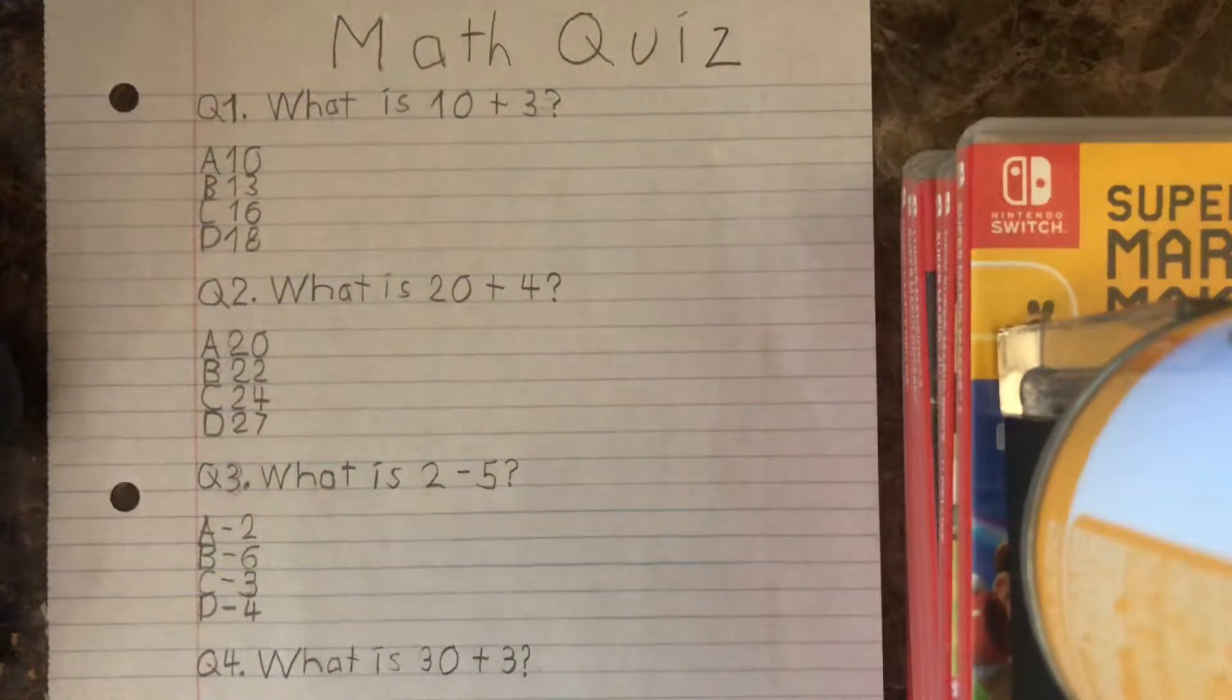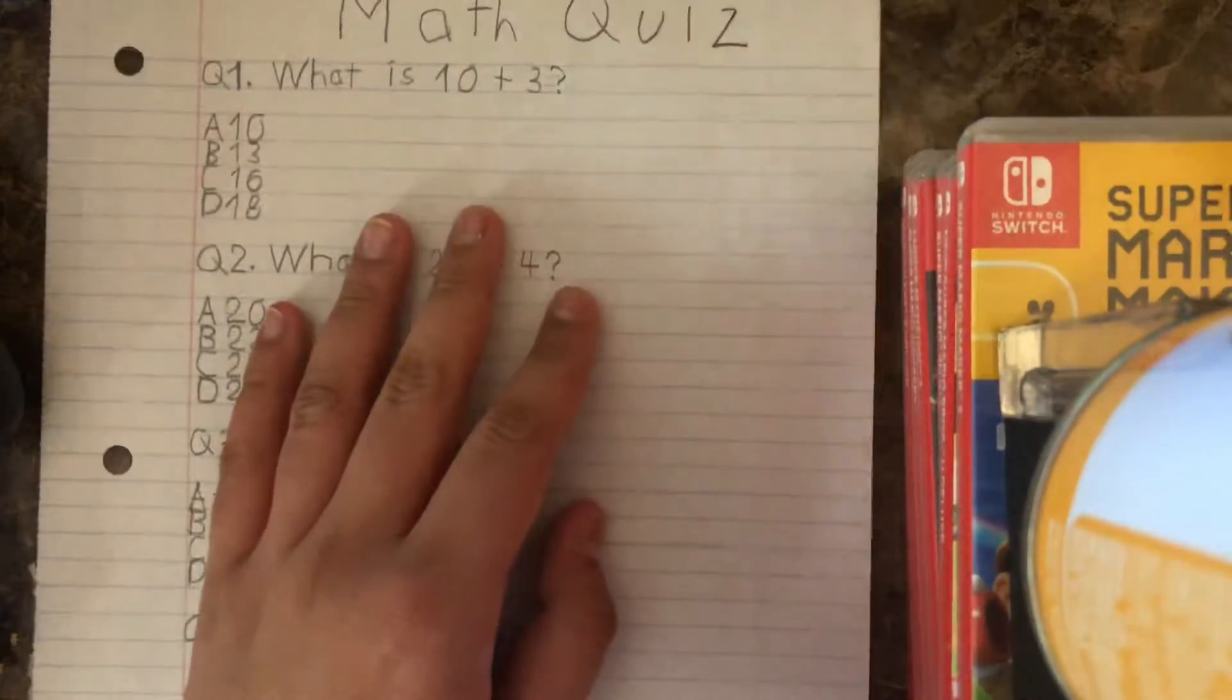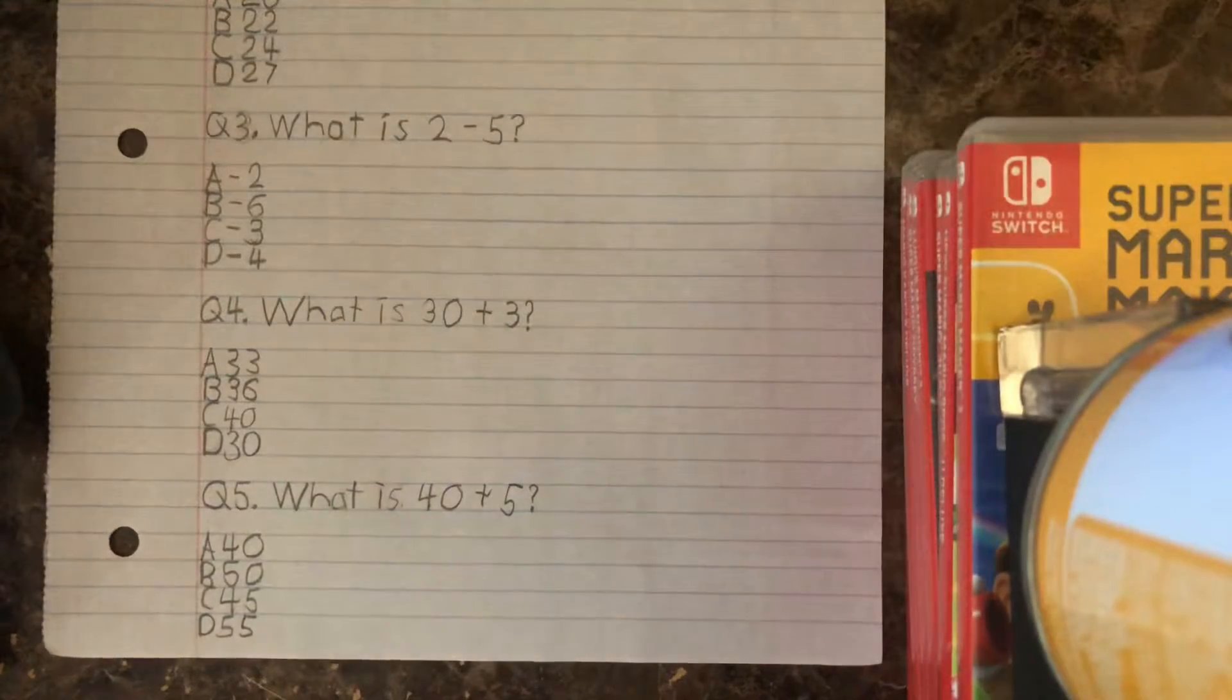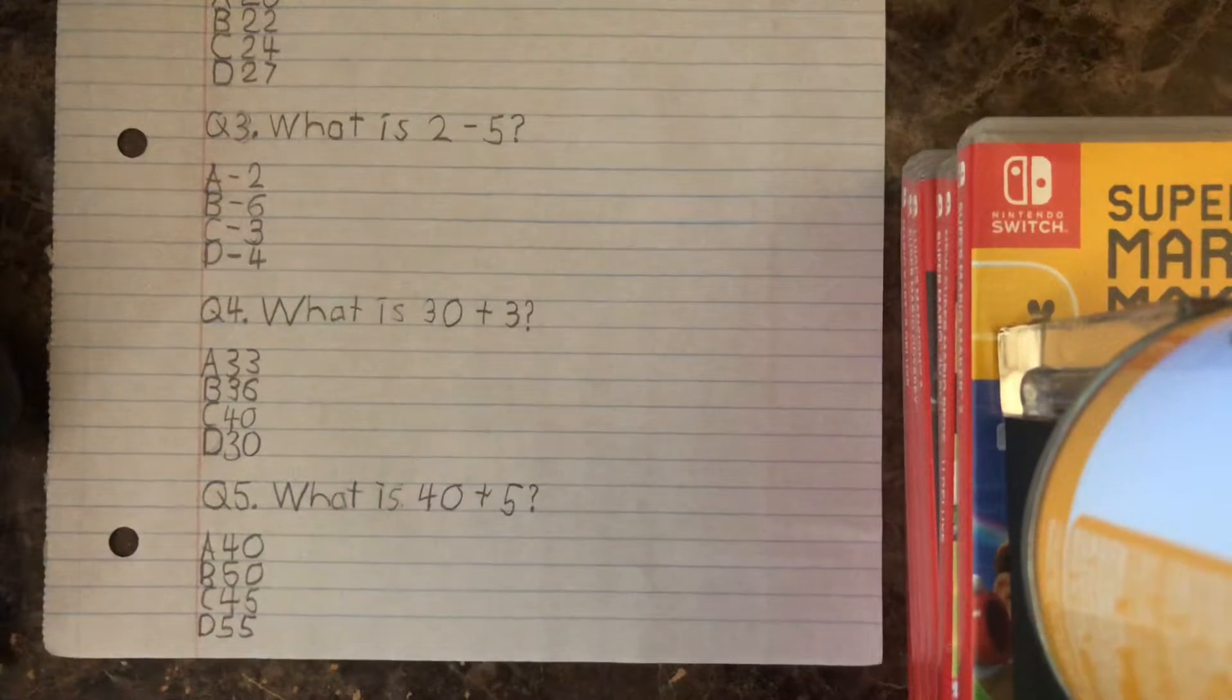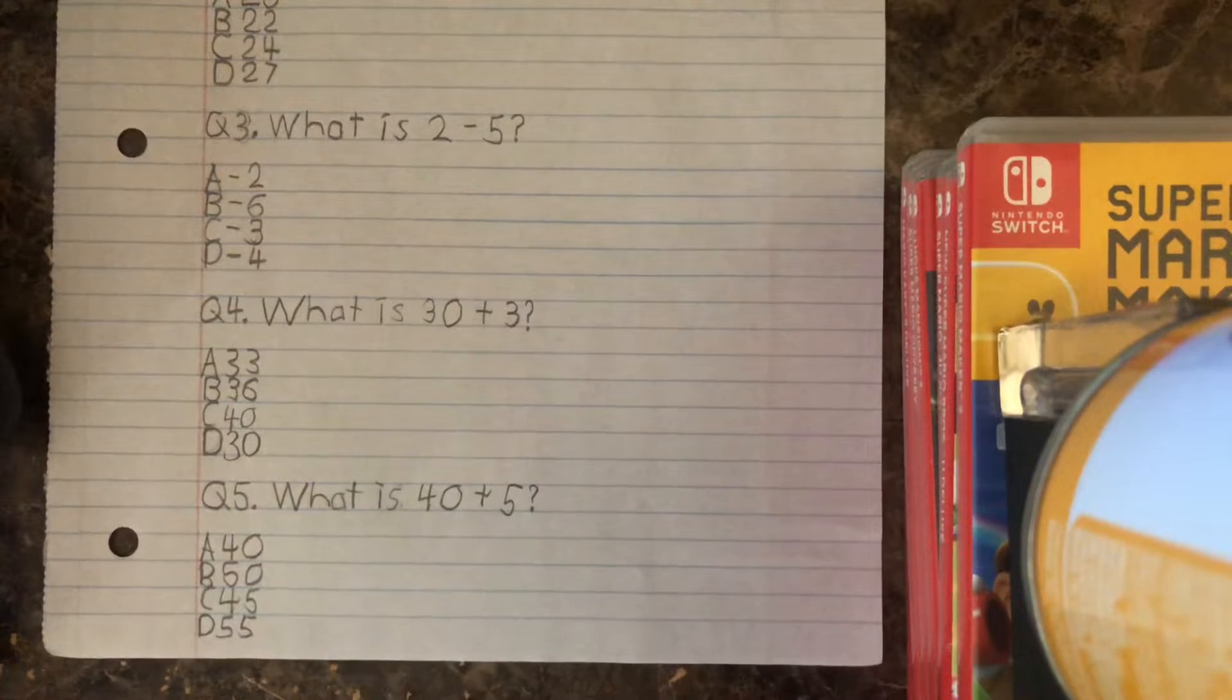Let me just get this stuff out of here. Alright, question number four. What is 30 minus, I mean, what is 30 plus 3? A, 33, B, 36, C, 40, or D, 30? What do you think of question number four? Just let me know, comment down below guys.